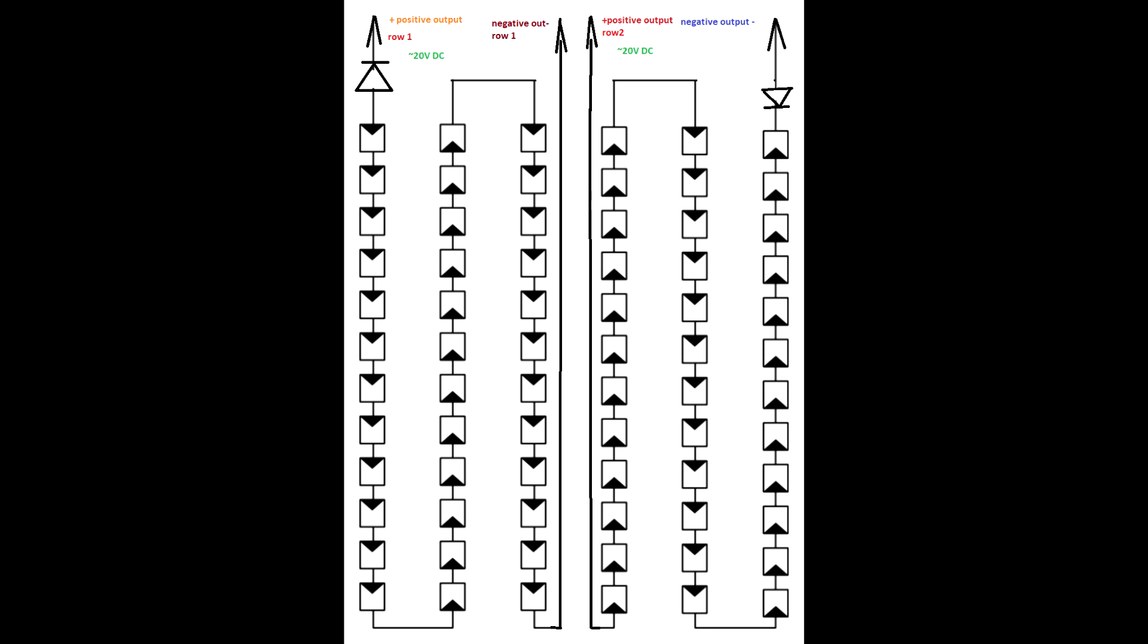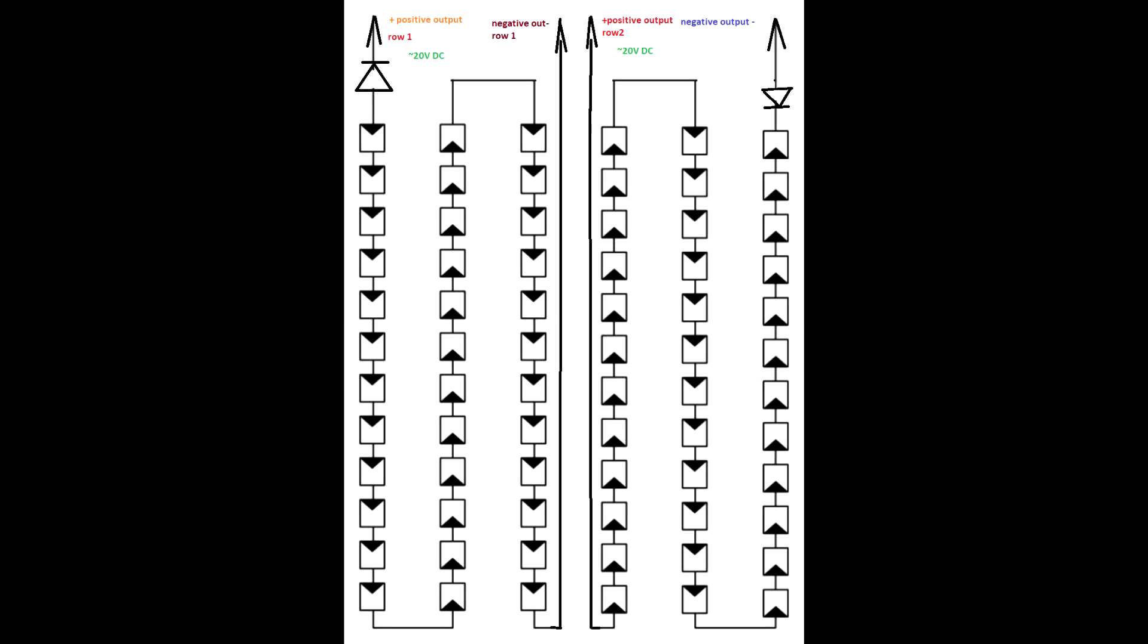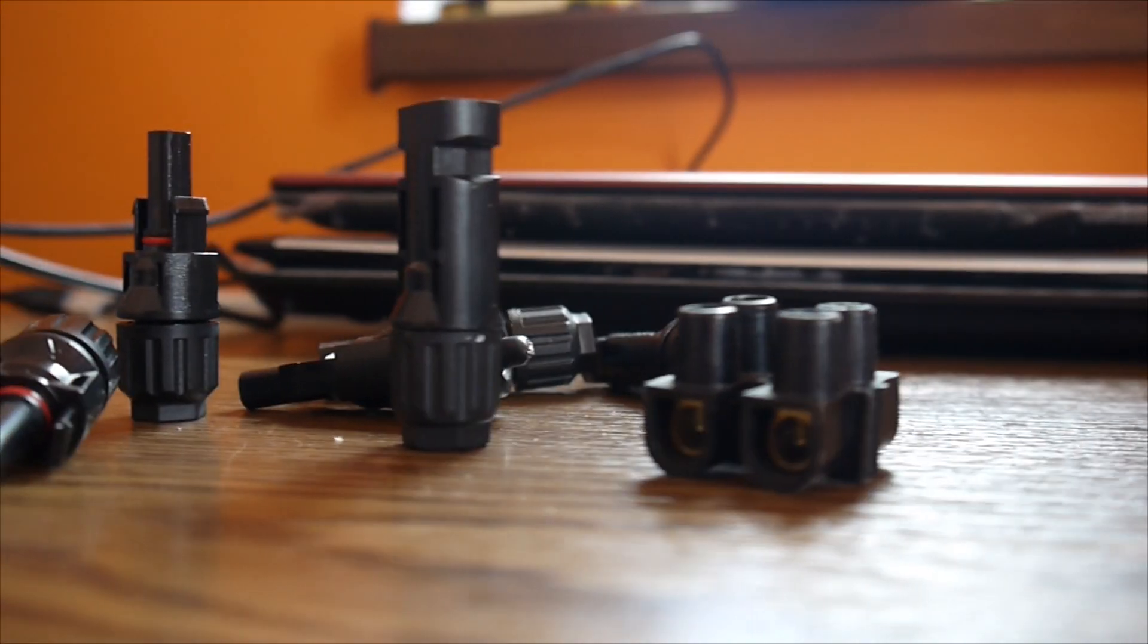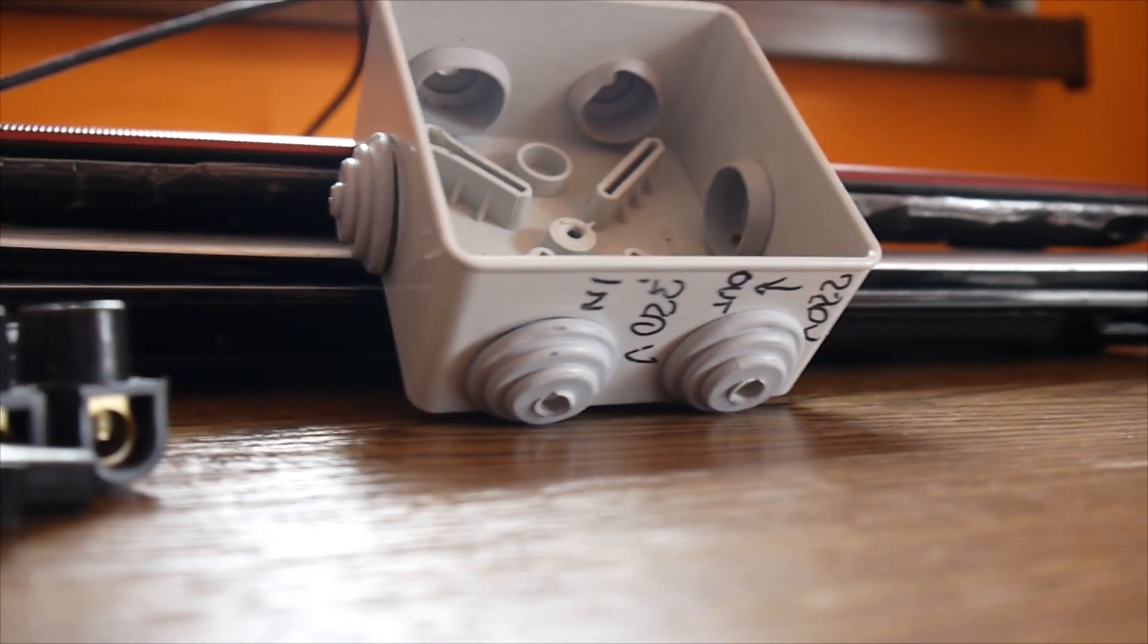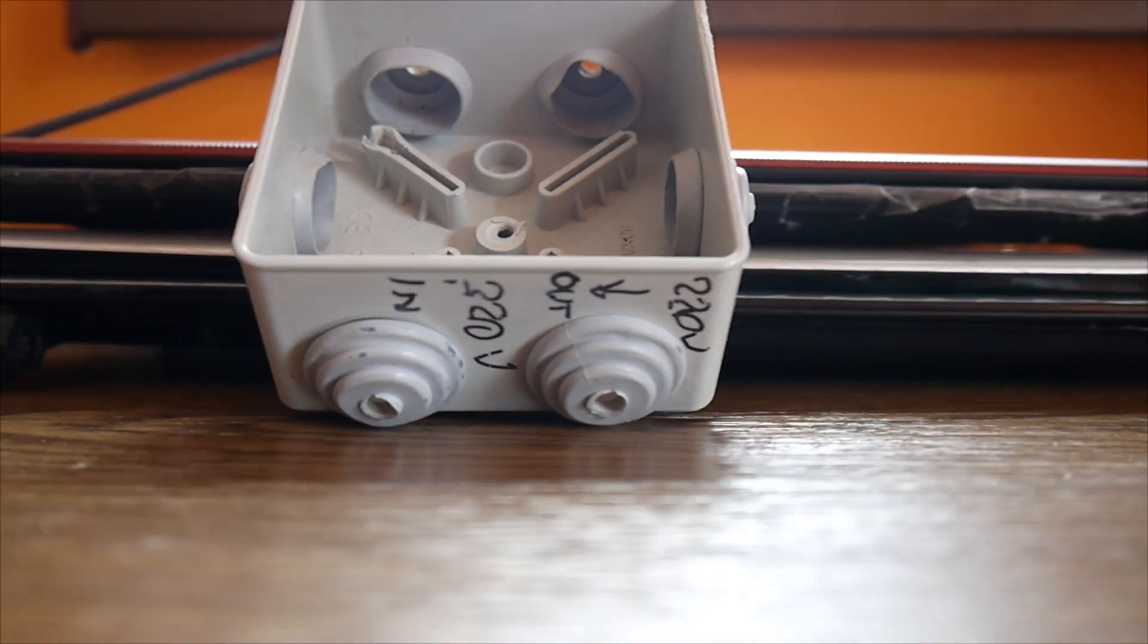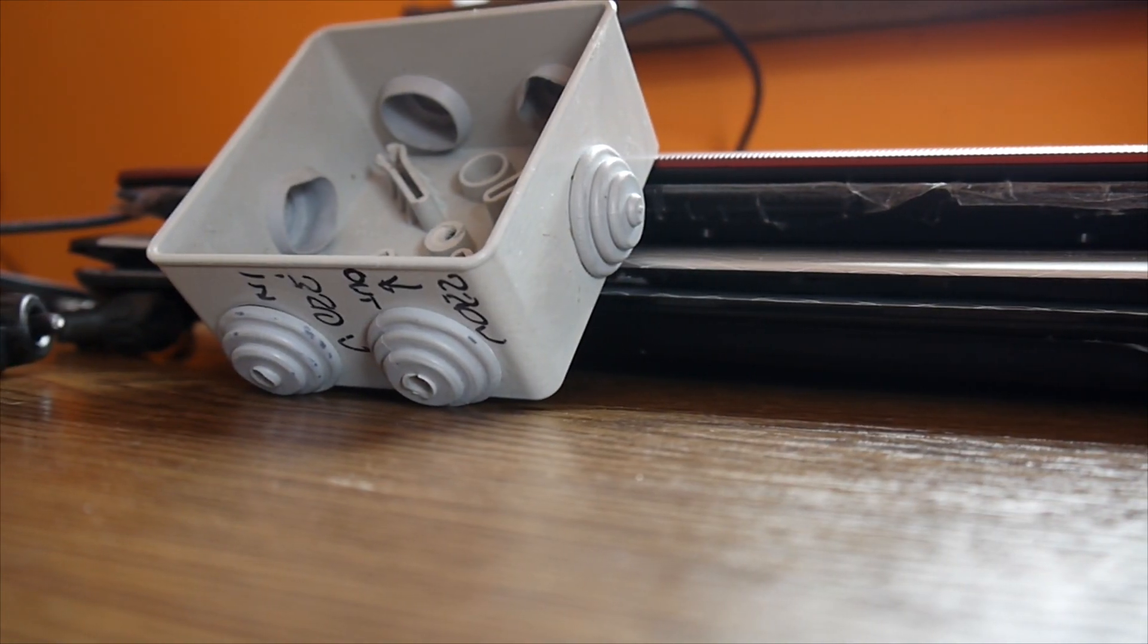In the new schematic you can see we still have diodes, one diode for each panel. These are Schottky diodes for protection, doesn't allow the reverse current through the panel. Eventually good cables, MC4 connectors and the plastic box allows me to change the configuration in series or parallel so I can use the panel both ways.